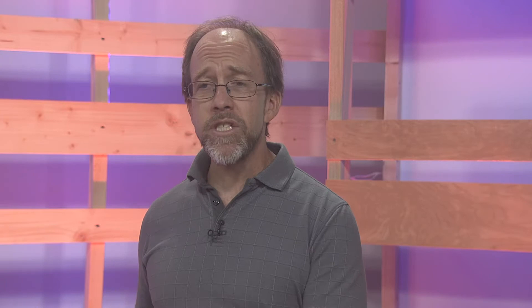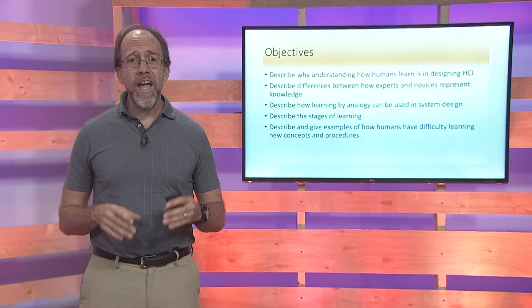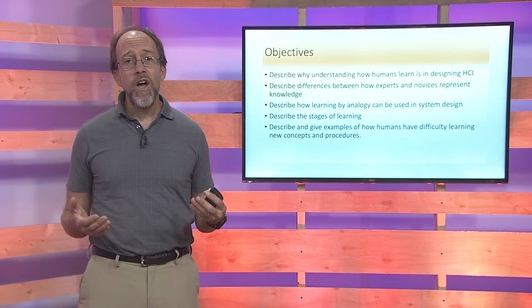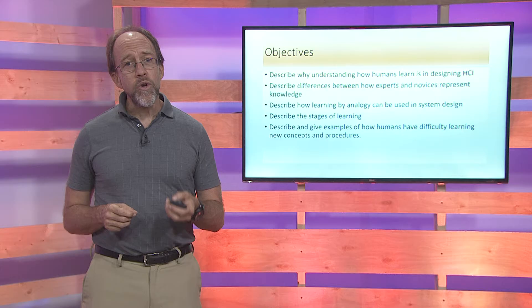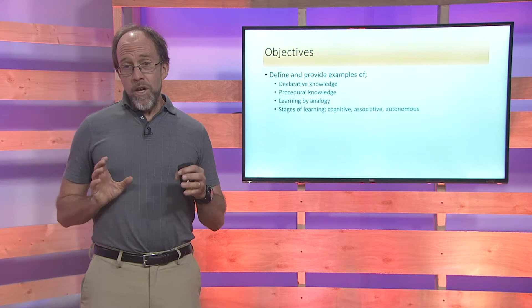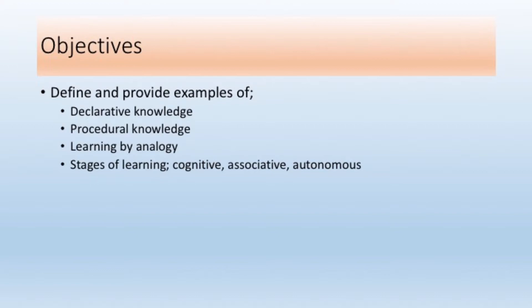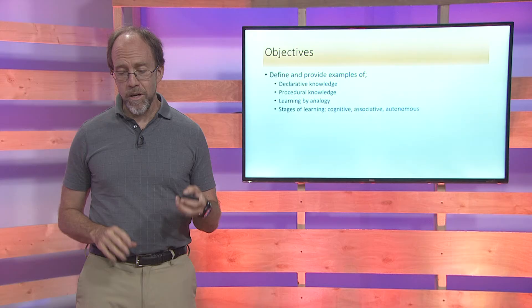Today we are going to deal with humans learning how to use systems and how your design — the HCI, the Human-Computer Interaction elements — are going to help you facilitate that learning. To understand that, you have to have a lot of understanding of how people actually learn. We're going to delve into that today, including the concept of declarative and procedural knowledge, how we learn through analogies, and how to move from declarative to procedural knowledge to figure out how to use systems.